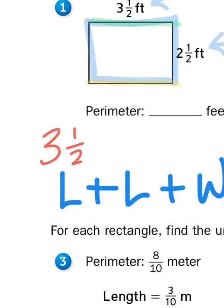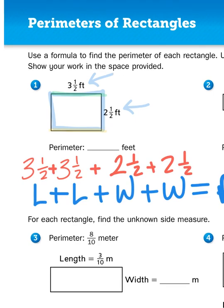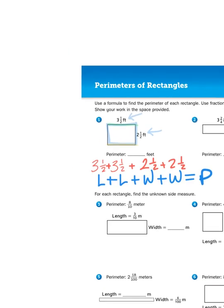Three and one half feet plus three and one half feet again, plus two and a half feet, plus two and a half feet again. Okay? So I wrote that out as a number sentence, but in order to solve this problem, it works better if I write it out vertically.